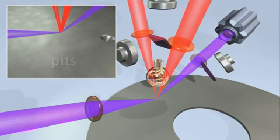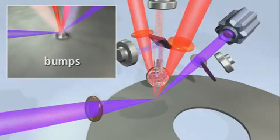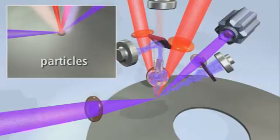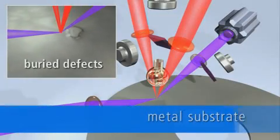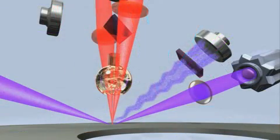The 7100 can identify and classify submicron pits, bumps, particles, and buried defects on metal, glass substrates, as well as media. The stealth channel also provides 50 nanometer PSL equivalent particle sensitivity independent of roughness variation within the disk.